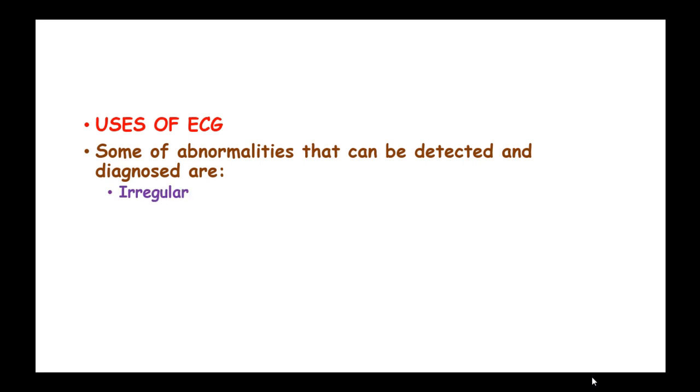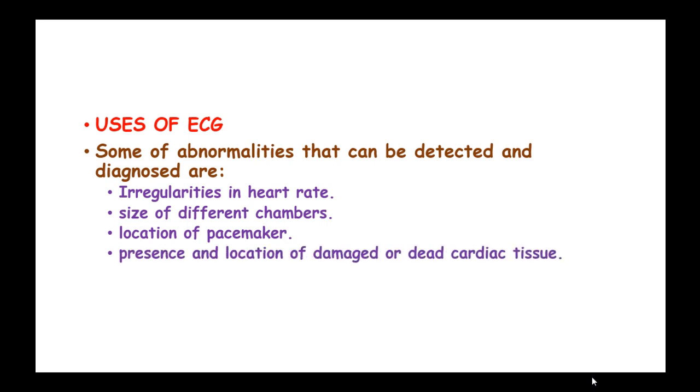What are the uses of an electrocardiogram? Some of the abnormalities that can be detected and diagnosed by an ECG include irregularities in heart rate, size of the different chambers of the heart, location of the pacemaker, presence and location of damaged or dead cardiac tissue, rate of conduction and conduction defects.